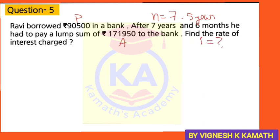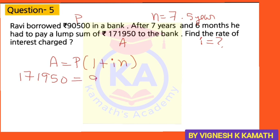Let's find I first. Later, if you multiply 100 to the I value, you will get R. The formula to use is: A = P × (1 + NI). Substituting the values: 1,71,950 = 90,500 × (1 + 7.5I). Taking 90,500 to the LHS: 1,71,950 divided by 90,500 equals 1 plus 7.5I.